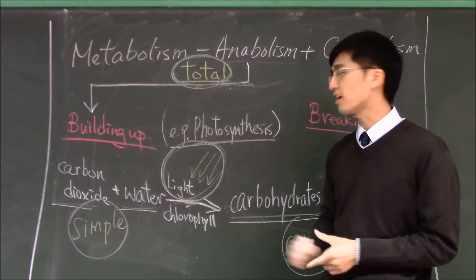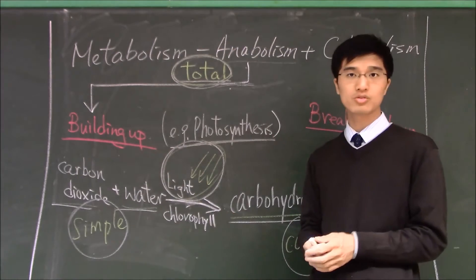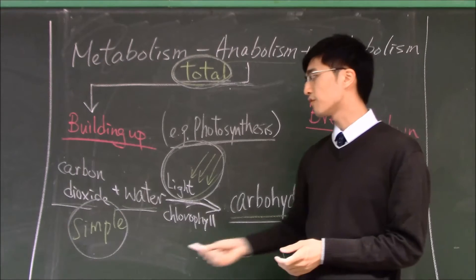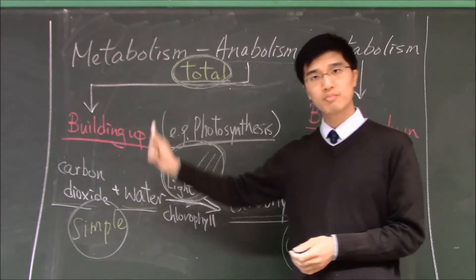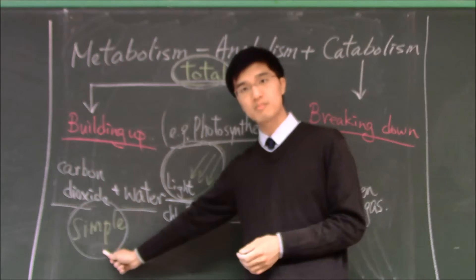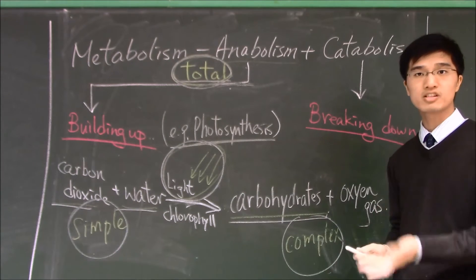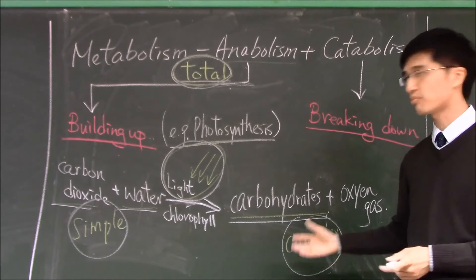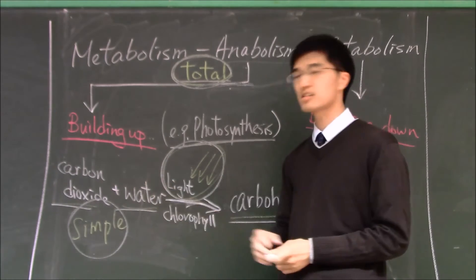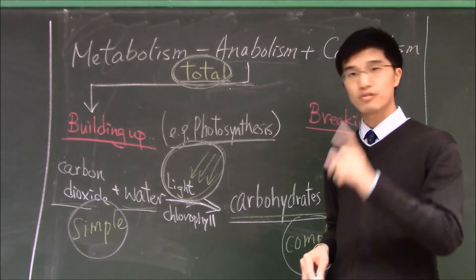Now we are going to talk about anabolism first. For anabolism, we have a classical example photosynthesis to demonstrate the concept. First of all, building up something from simple to complex. CO2, H2O, they are very simple. But for the carbohydrates, they are more complex than the carbon dioxide and the water. That's the first concept.